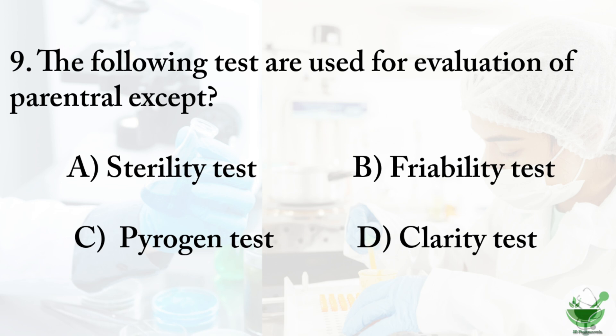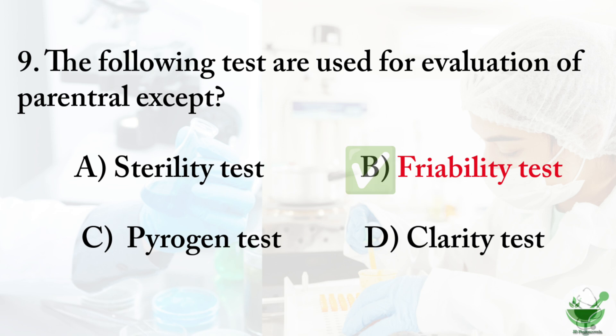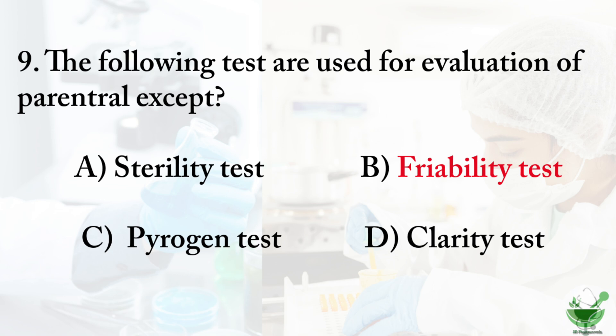Question number nine: the following tests are used for evaluation of parenterals, except — option A: sterility test, option B: friability test, option C: pyrogen test, option D: clarity test. The correct answer is B, friability test. Quality control tests for parenterals include uniformity of content, volume, weight, pyrogen, sterility, clarity, particulate matter, bacterial endotoxins, and leakage.